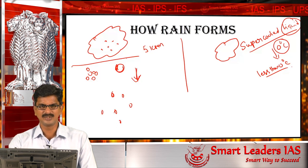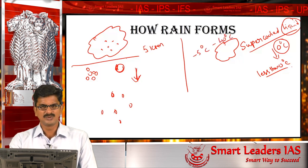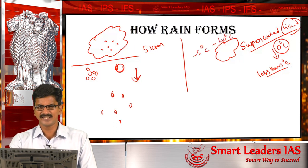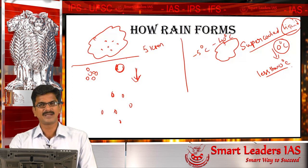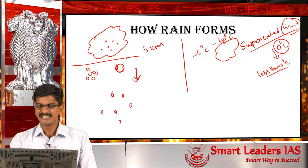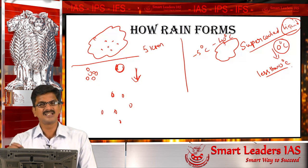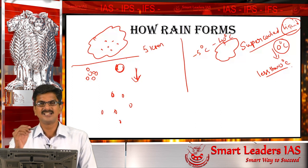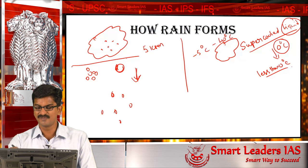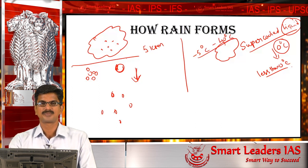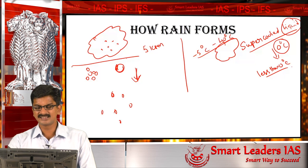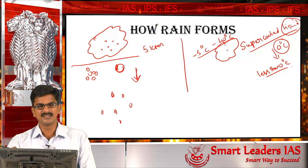The condition in the cloud is that the temperature remains between minus 5 degrees Celsius to minus 40 degrees Celsius. In this condition, the water remains as liquid — rather than being frozen at this temperature, it remains as liquid. So how does this type of cloud give rain?